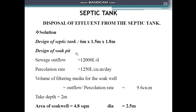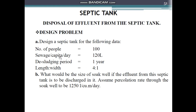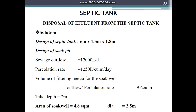Next is the design of the soak well. Sewage outflow is 12,000 liters per day (100 people × 120 liters/capita/day). The percolation rate is given as 1250 liters per meter cube per day. So the volume of filtering media for the soak well = 12,000 ÷ 1250 = 9.6 meter cube. Assuming a depth of 2 meters, the area = 9.6 ÷ 2 = 4.8 square meters. Since the soak well is circular, using π/4 × d² = 4.8, the diameter comes to 2.4 meters.